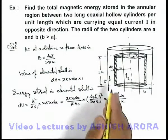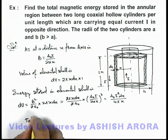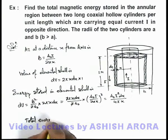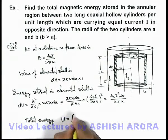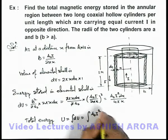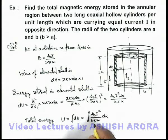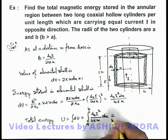If this is the energy stored within the elemental shell, we can calculate the total energy in the annular region as integration of dU. If we integrate the same expression of μ₀I²/(4πx) dx, which is integrated from a to b, then see what we are getting here.